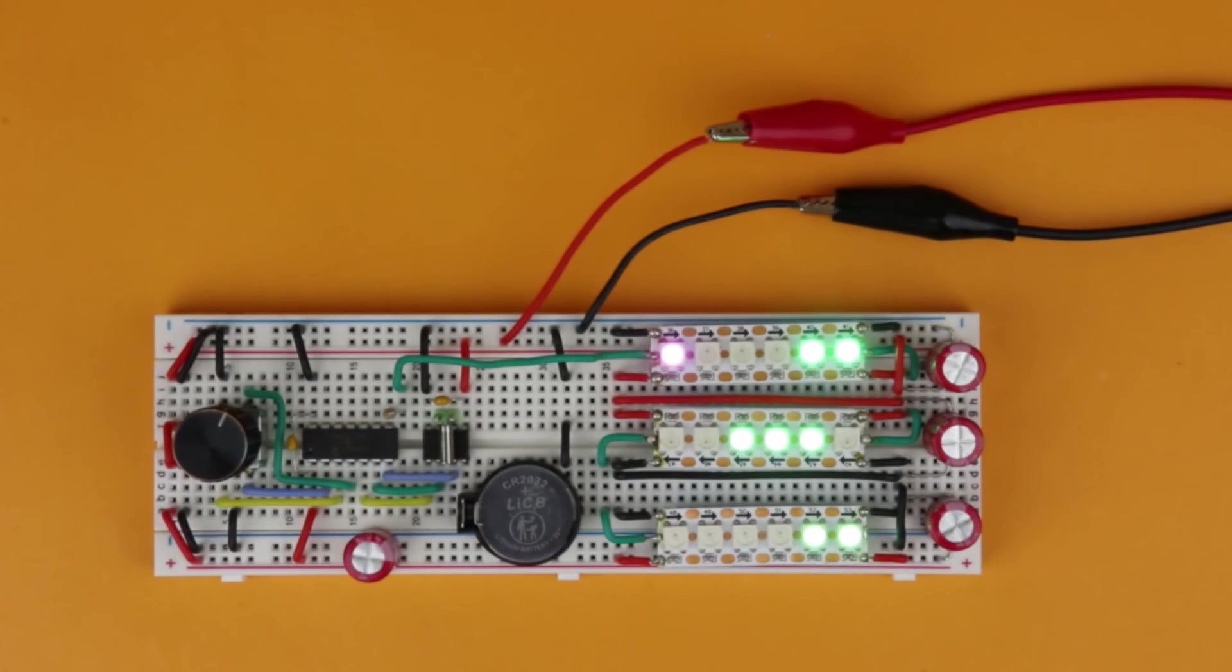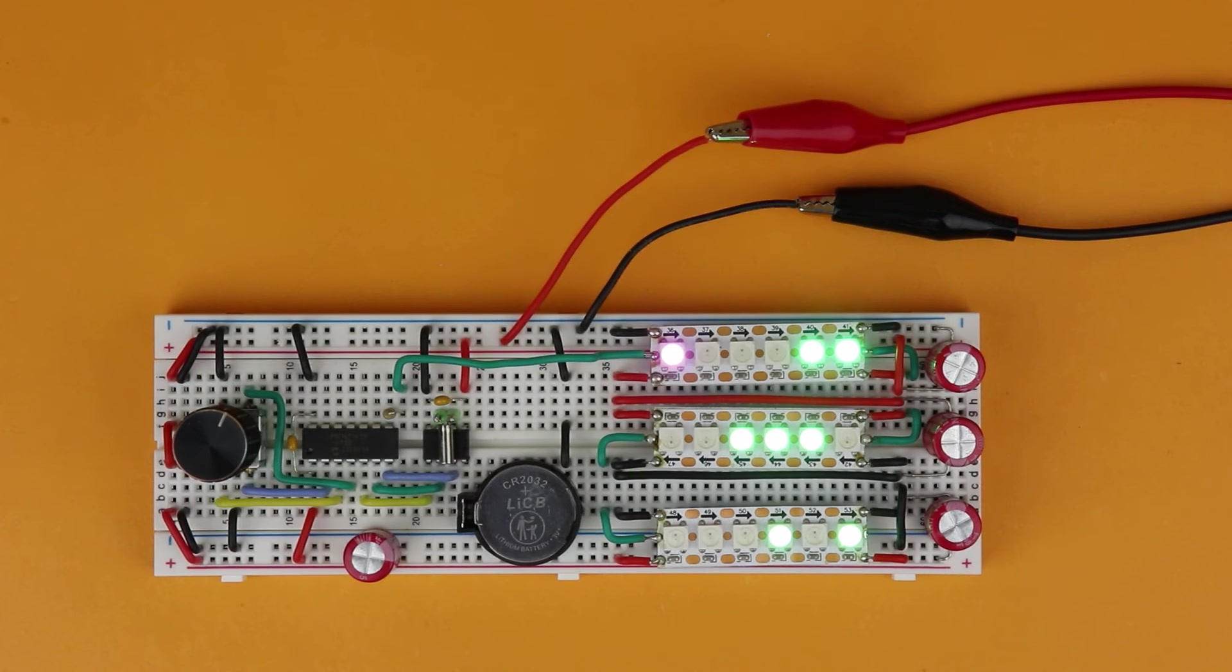Now chances are, if you build this project on a breadboard, you will run into some sort of problems. And I want to save you some time, so let's talk a little bit about some common pitfalls when building this type of thing on a breadboard. If you think about it, the maximum current in our circuit is actually quite high. We have 54 LEDs in total, which at full brightness each take 20 milliamps. That's around 1 amp in total.